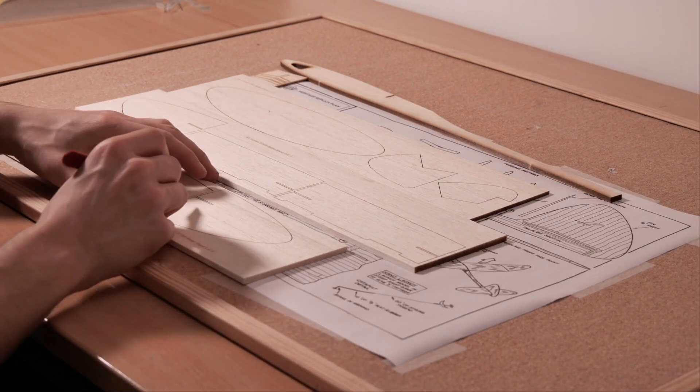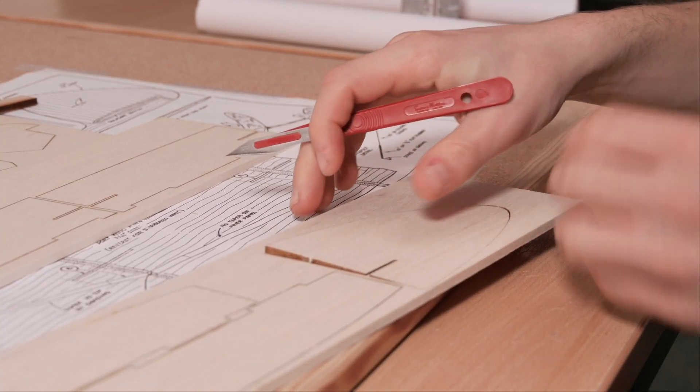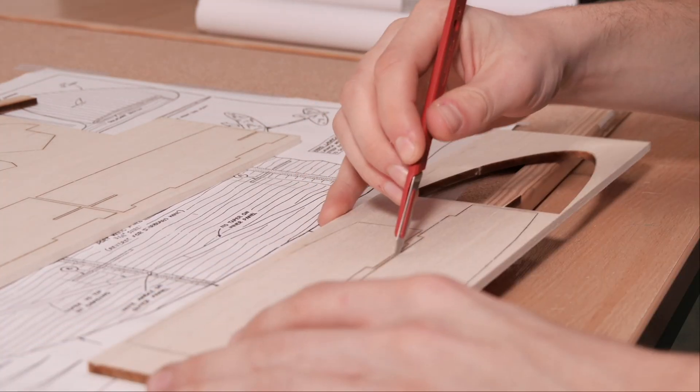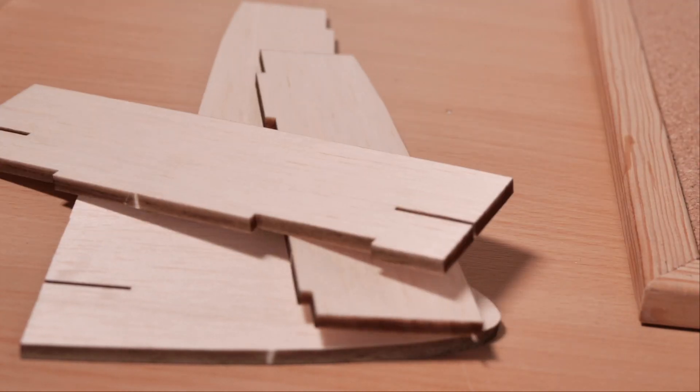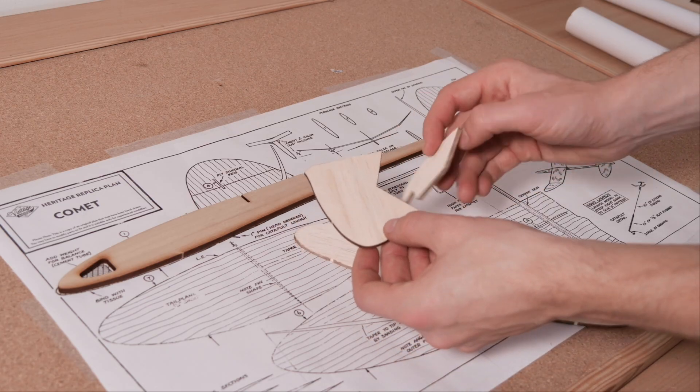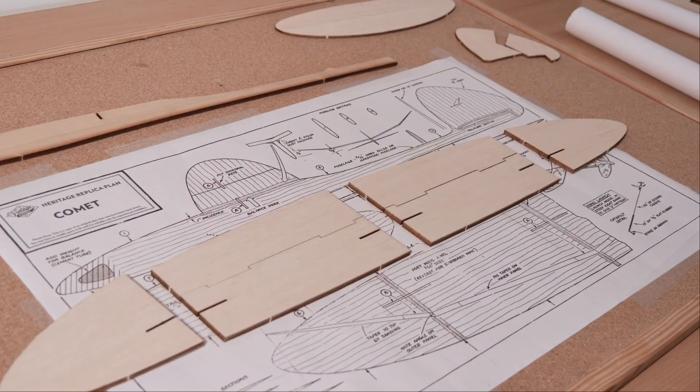Okay, getting stuck in, the first thing to do is to release all of the laser cut parts from their sheets by cutting the small tabs away with a sharp craft knife. This aeroplane is dead simple, so it won't take long for you to identify what each part is and where it goes.